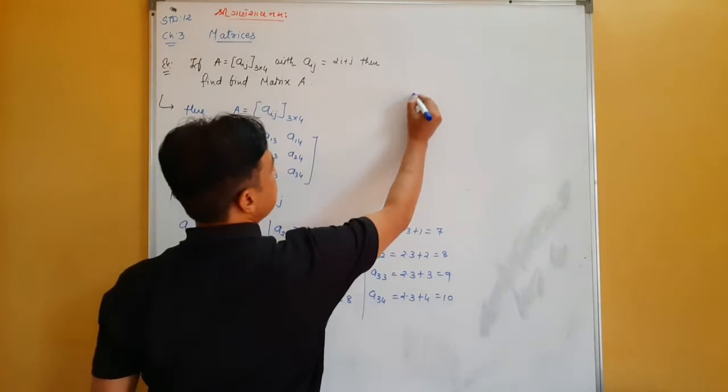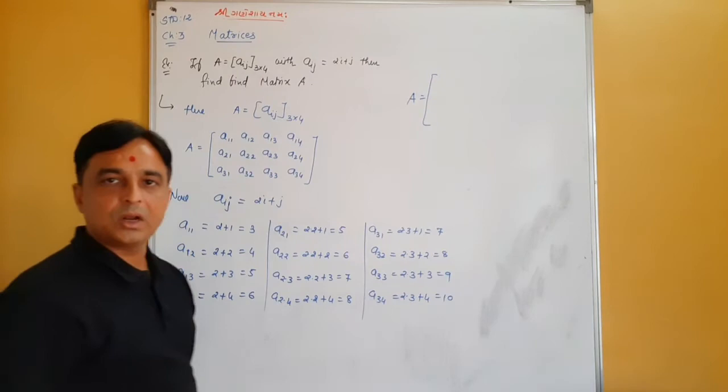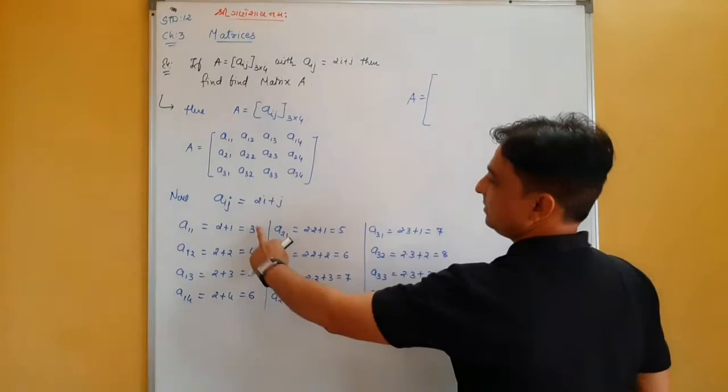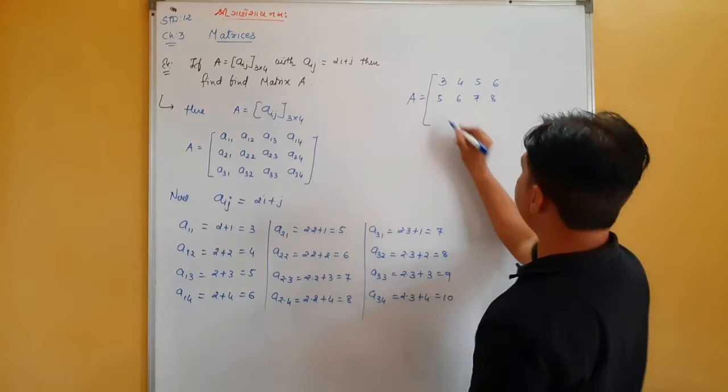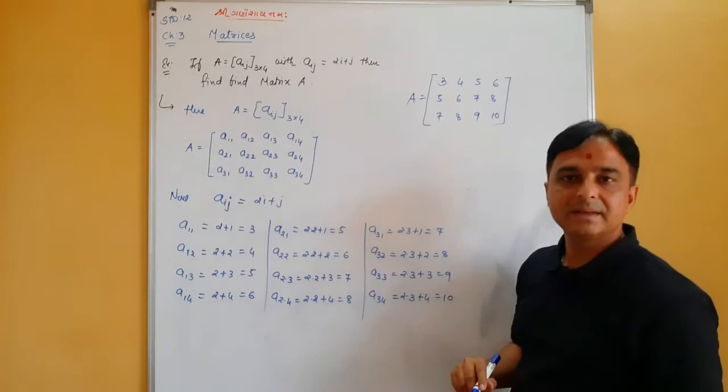Now put these values inside the bracket and arrange the array in rectangular format. The required matrix A is: [3, 4, 5, 6; 5, 6, 7, 8; 7, 8, 9, 10]. This is our required matrix.